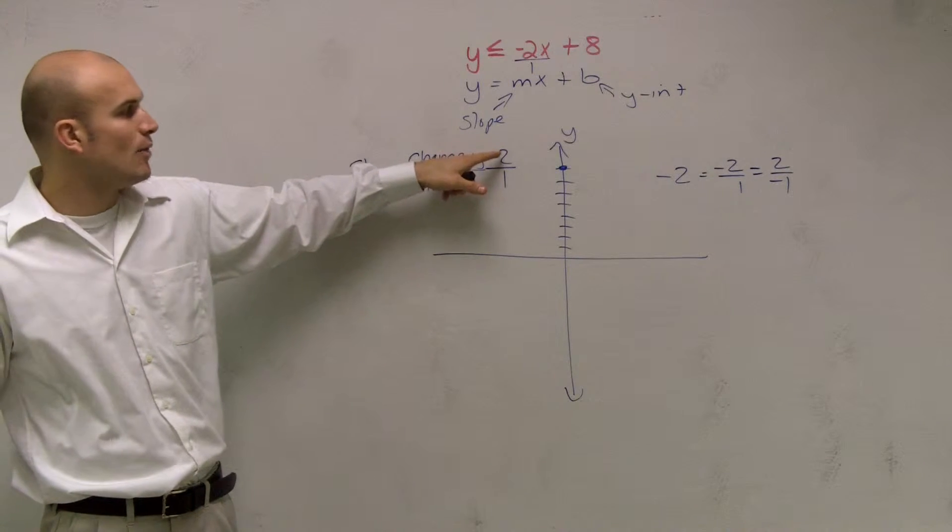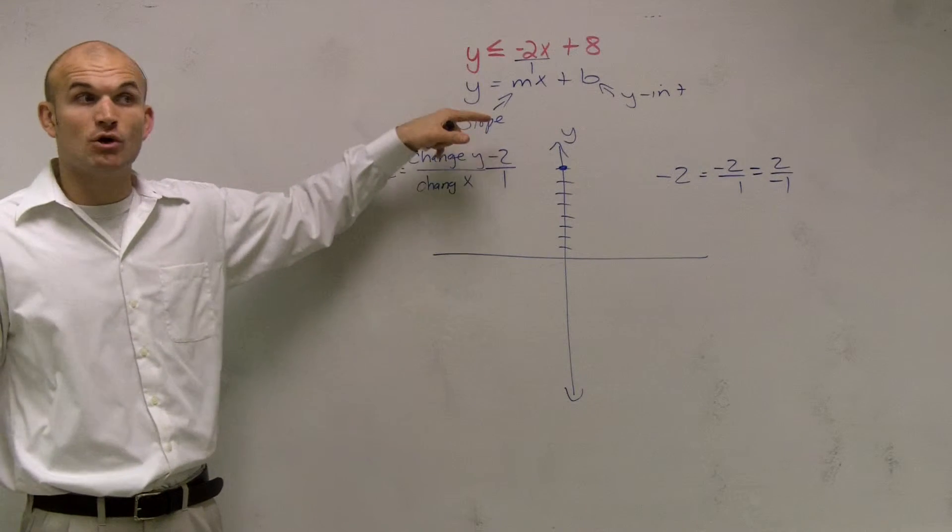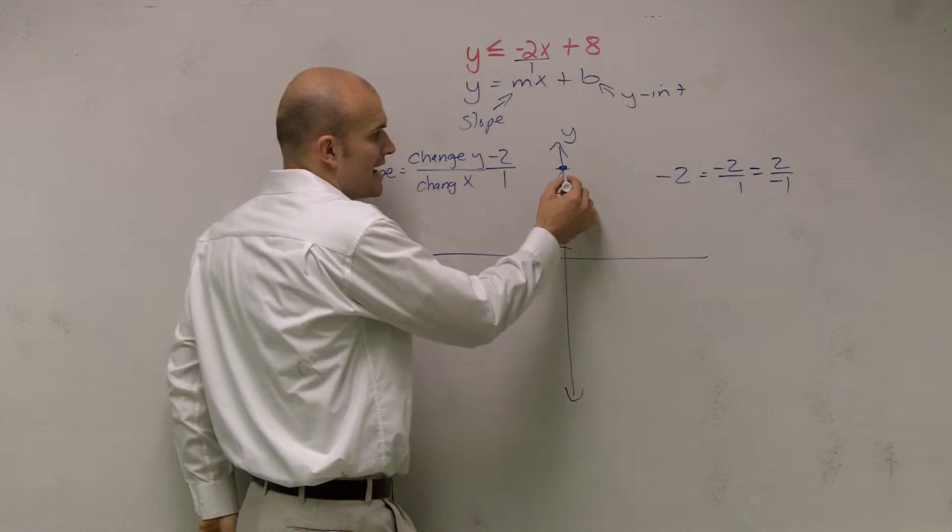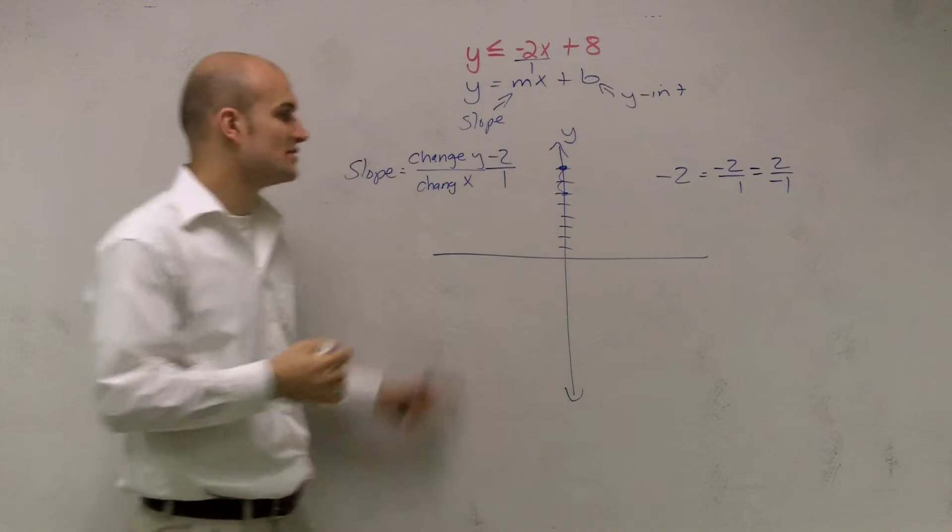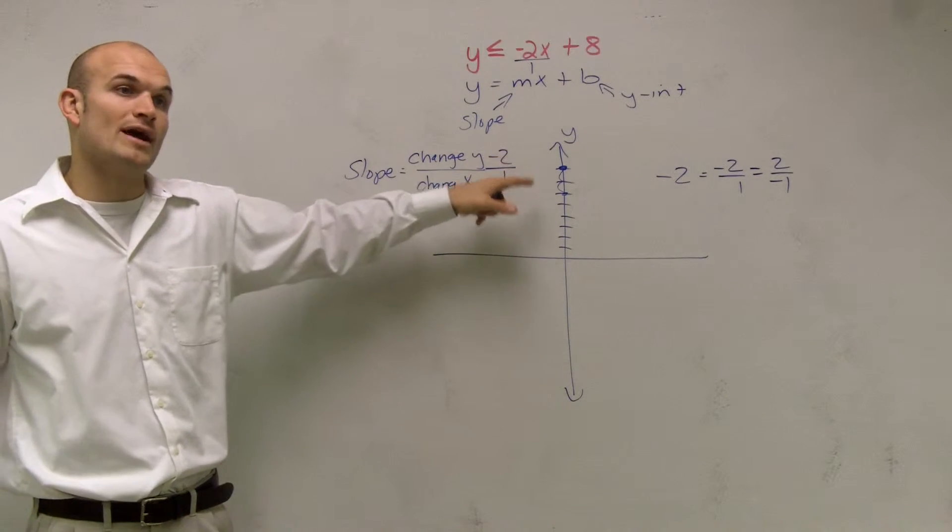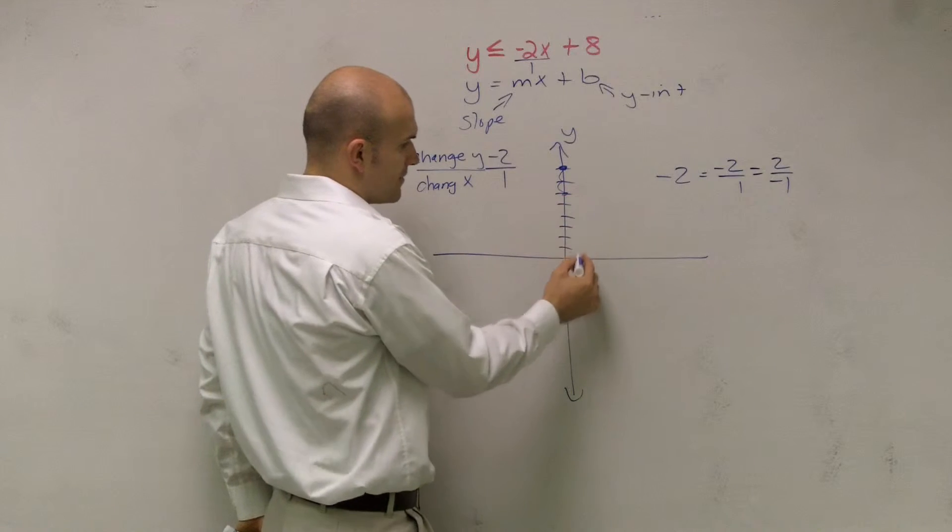So negative 2 equals negative 2 divided by 1 equals 2 over negative 1. If my change in y is negative 2, am I going to go up or down 2? Down 2 units. Then the change in my x values is positive 1. Am I going to go to the right or to the left? To the right one.